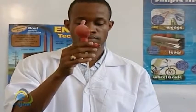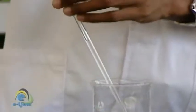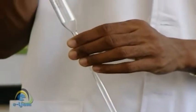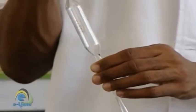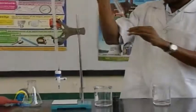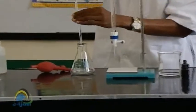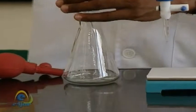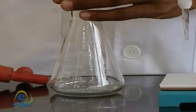Rinse a 25 cubic centimeter pipette with a little of the sodium carbonate solution and using a pipette filler, measure 25 cubic centimeters of the 0.05 molar sodium carbonate solution into the pipette and transfer to a 250 cubic centimeter Erlenmeyer flask.